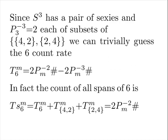Since S3 has a pair of sexes and P equals five, and five minus three equals two, each of subsets of the atomic pairs, we can trivially guess the six count rate. That is, the type count of sexes at M is twice the second minor primordial minus twice the third minor primordial.